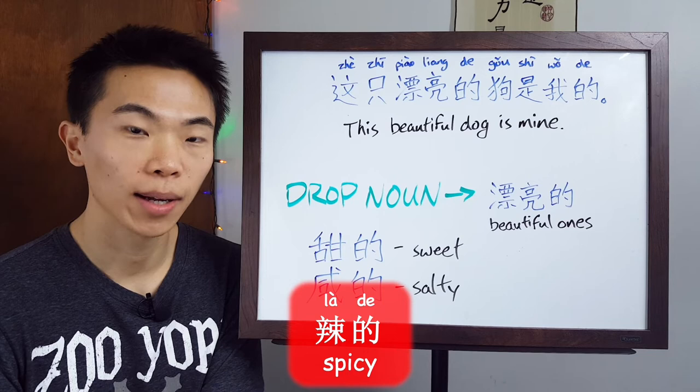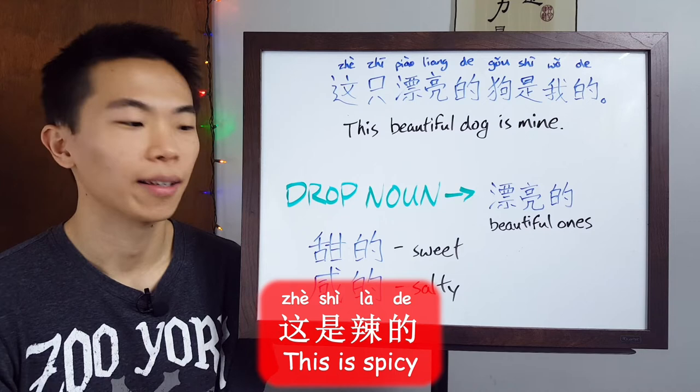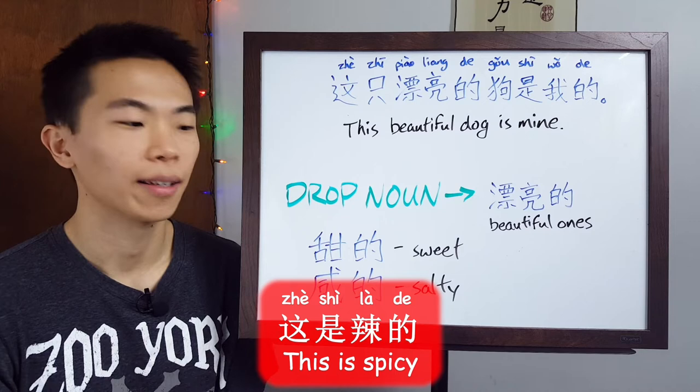Going along with that, you would also hear 辣的 — the spicy ones — a lot in restaurants. If you're ordering food, they might say 这些辣的, like 'this is spicy, do you want that? Are you okay with that?'